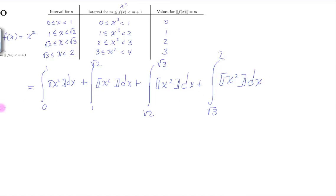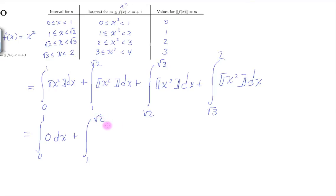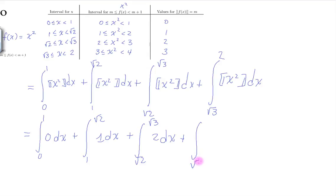In the first interval the floor value is 0, so we have the integral from 0 to 1 of 0 dx. Then the integral from 1 to square root of 2 of 1 dx, the integral from square root of 2 to square root of 3 of 2 dx, and the integral from square root of 3 to 2 of 3 dx.